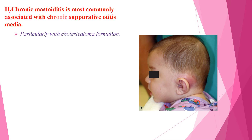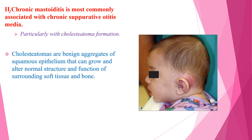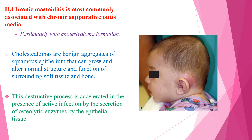Chronic mastoiditis is most commonly associated with chronic suppurative otitis media, particularly with cholesteatoma formation. Cholesteatomas are benign aggregates of squamous epithelium that can disrupt the normal structure and function of surrounding soft tissue and bone. This destructive process is accelerated in the presence of active infection by secretion of osteolytic enzymes by the epithelial tissue.